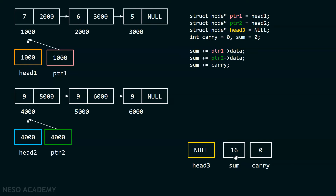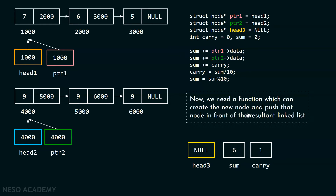Here 16 means that one must be carried forward and six must be stored as the result. We perform: carry = sum / 10, which gives 1, and sum = sum % 10, which gives 6. Now we can store this value in the new node. We need a function which can create the new node and push that node in front of the resultant linked list. I will create a push function, passing head3 and sum to it.